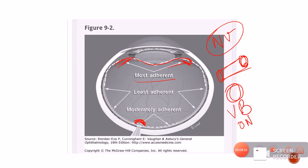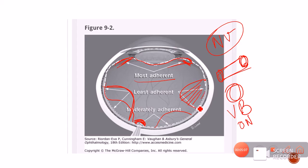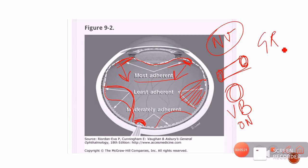Whenever a PVD takes place, it starts separating from the places where it is least adhered first, and then it separates from the disc. Last of all, it separates from the vitreous base — which is very, very rare. Whenever it separates from the vitreous base very forcefully, it might actually cause giant retinal tears, which are very huge tears and can lead to an RD.